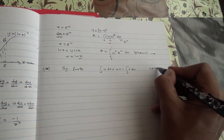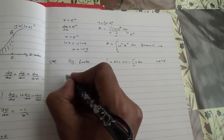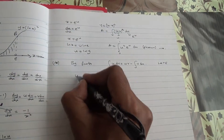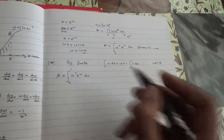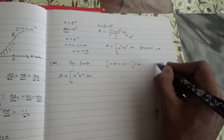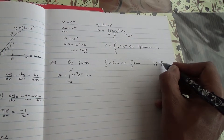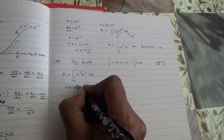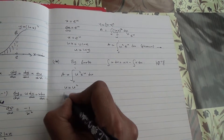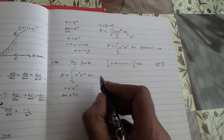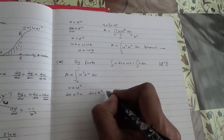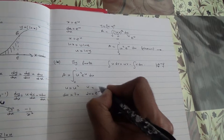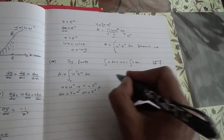By using the LATE technique, u squared is algebraic — algebraic comes first. The exponential function is last. So I'm going to say that u is equal to u squared, and we differentiate: du over du is equal to 2u. Then I'm going to say dv is equal to e to the u, taking the exponential form last. Integrating this back, you get v as e to the u.